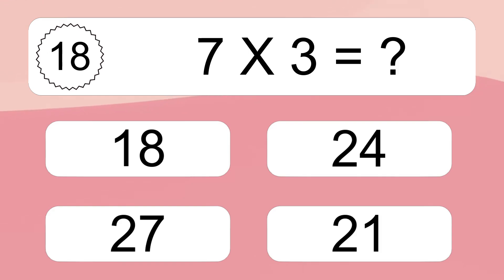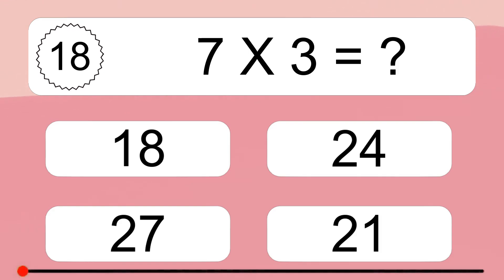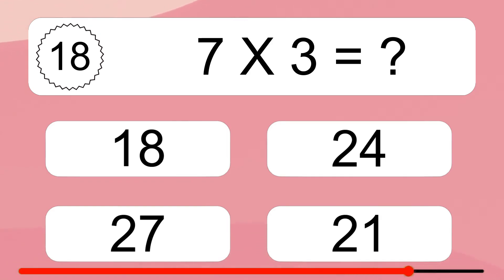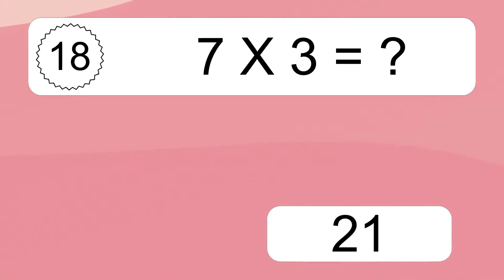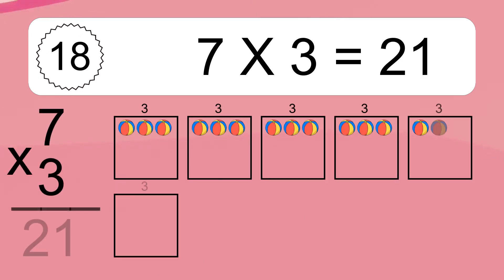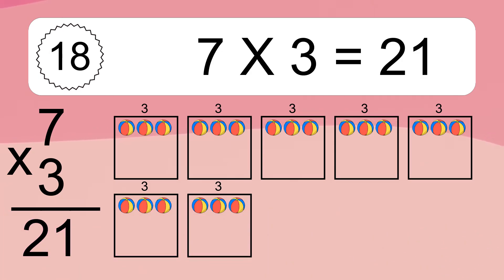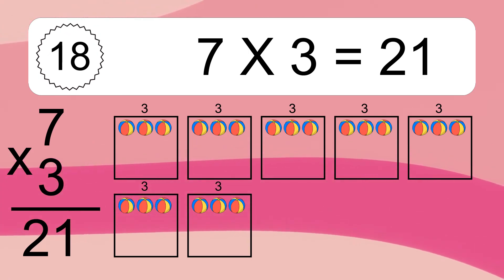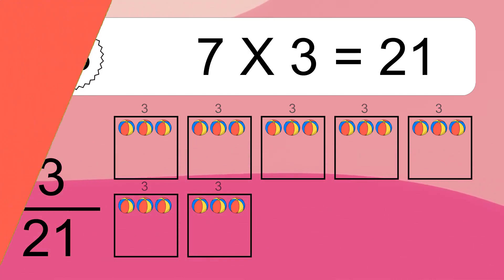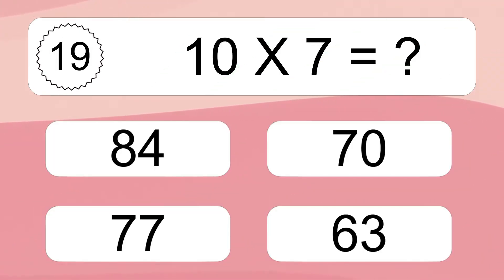Seven times three equals what? Seven times three equals 21. We have seven boxes, and each box has three colorful balls inside. If you count all the balls in all the boxes together, you will have seven times three balls. This equals 21 balls.